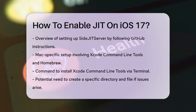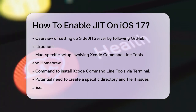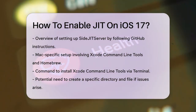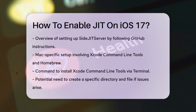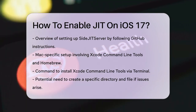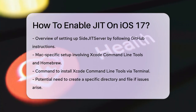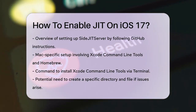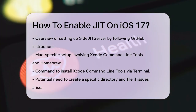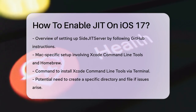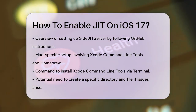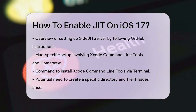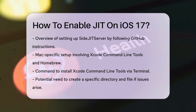For those using a Mac, the process is a bit different due to changes in iOS 17. You'll need to install Xcode command line tools and Homebrew. Open Terminal on your Mac and install Xcode command line tools using the command 'xcode-select --install'. If you encounter any issues, you might need to create a specific directory and file as described in the instructions. Then install Homebrew using the provided command.